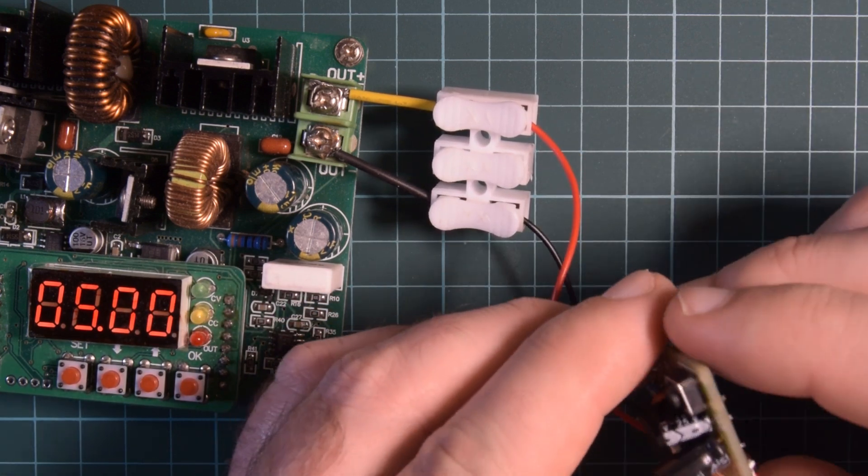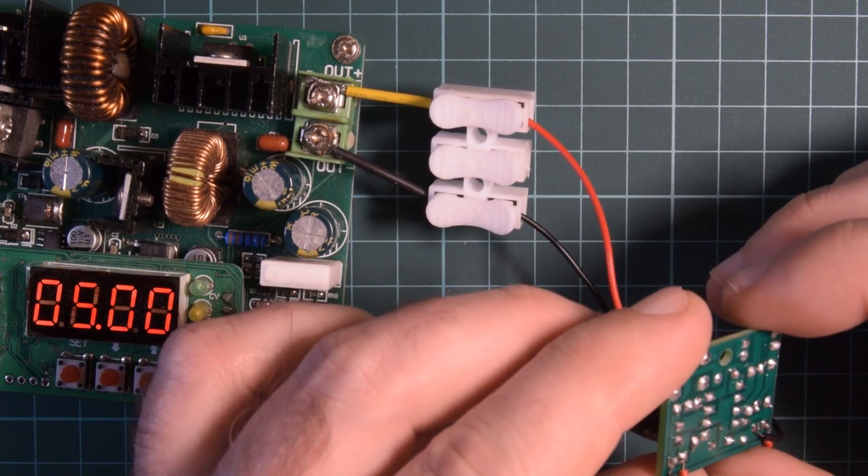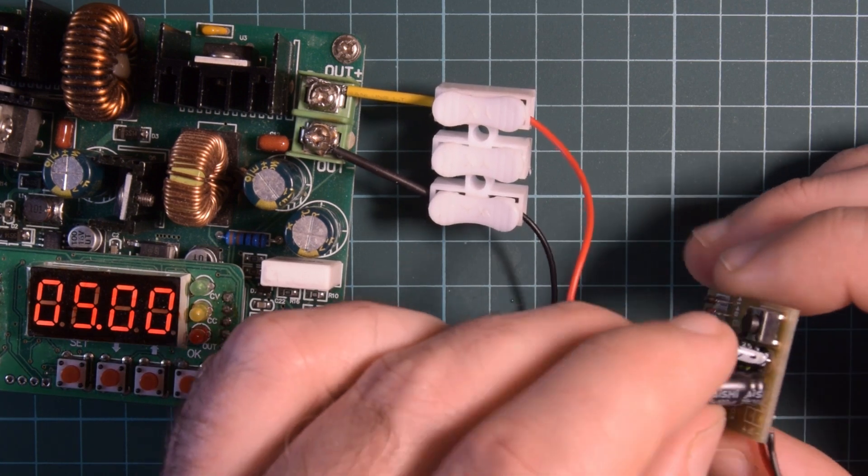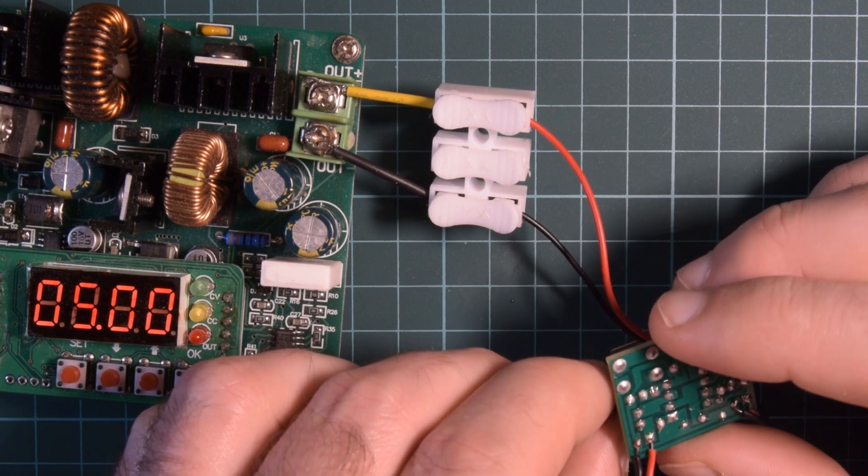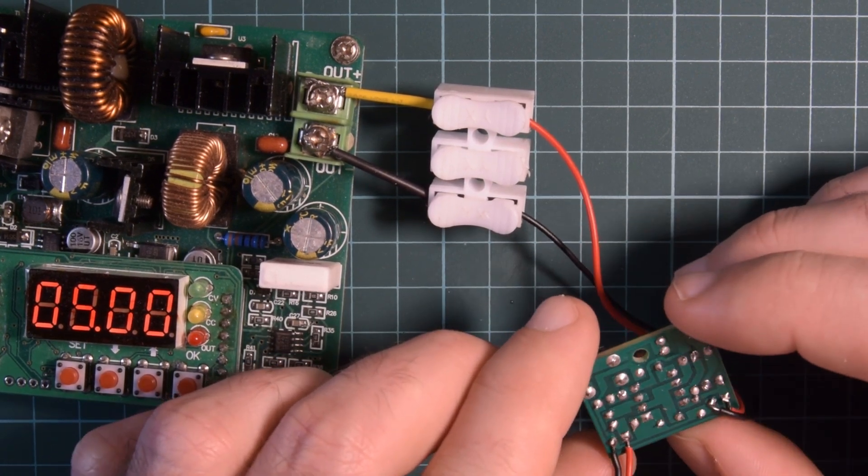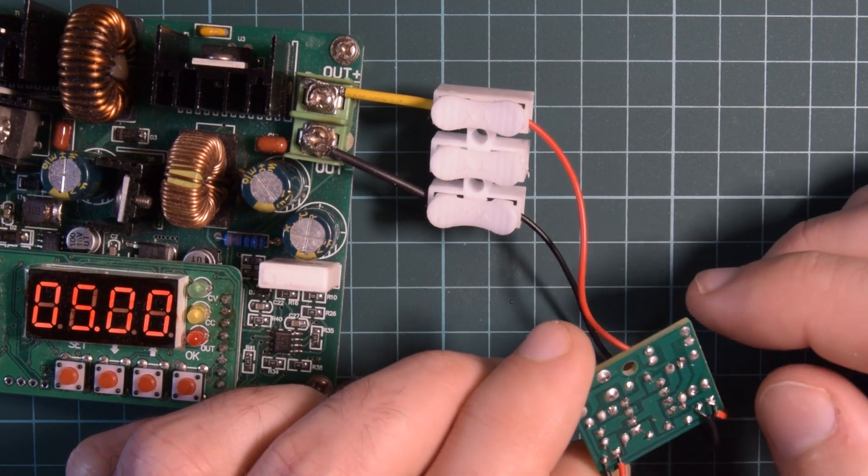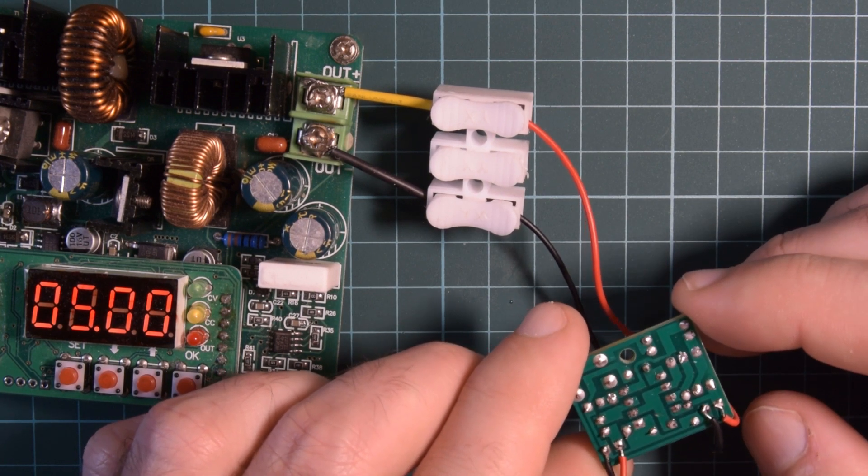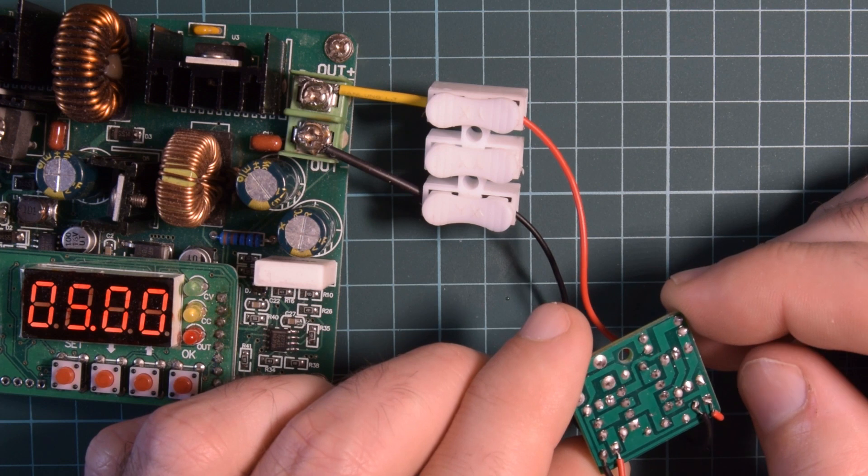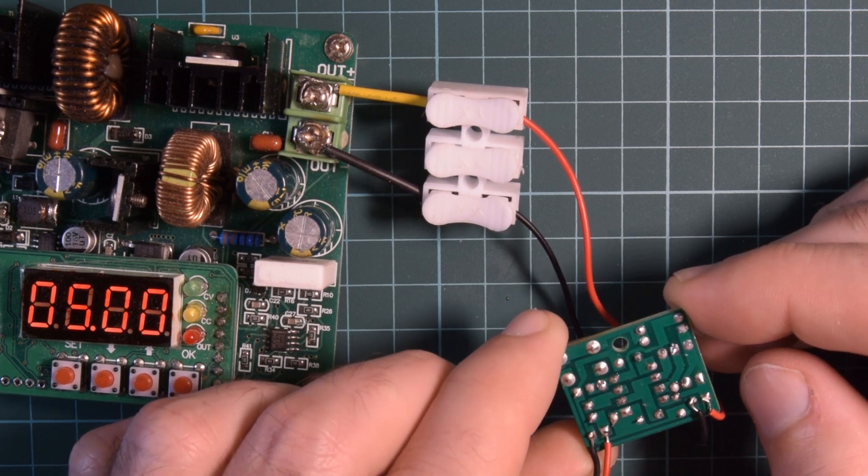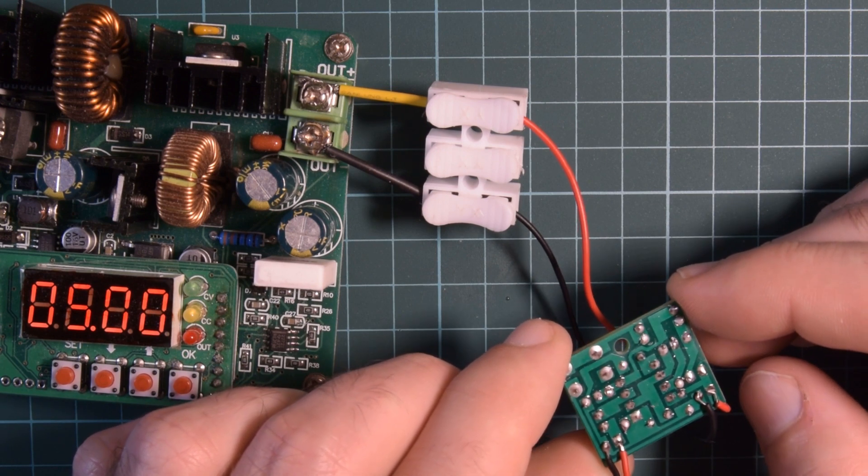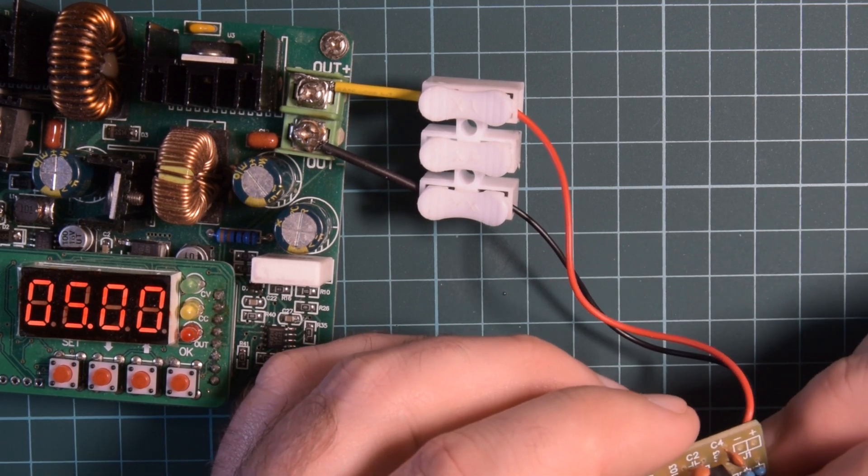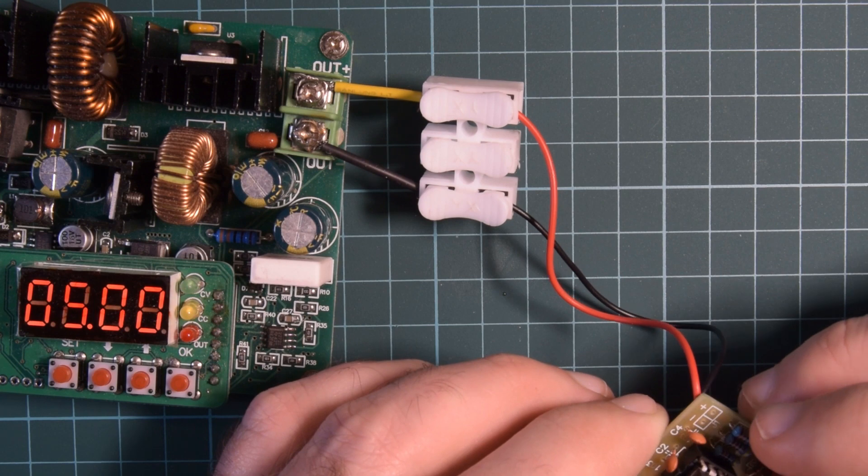Very interesting. It worked once. Just taking a quick look here. All the caps are 25 volts. No solder bridges that I can see. It looks good. I'm not sure what's going on here. The 555 timer is in the correct direction as well. NE555P.